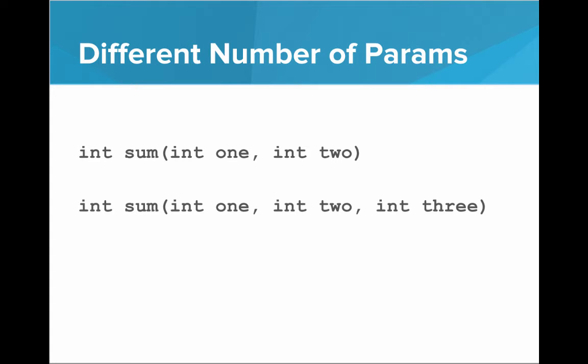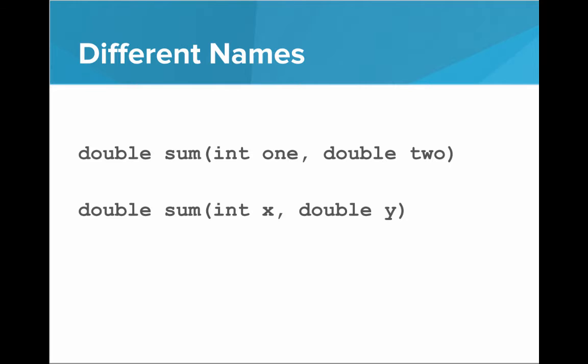What if we have a different number of parameters? One sum takes two ints, and one sum takes three ints. Yes. Again, Java is able to tell based on the parameters that you pass the method, which one is being called. What about different names? If we have a sum that takes an int and a double, and then another sum that takes an int and a double, but the names are different, then will Java be able to tell the difference? No. The method signatures have to be different. It's not enough to just name the parameters different.